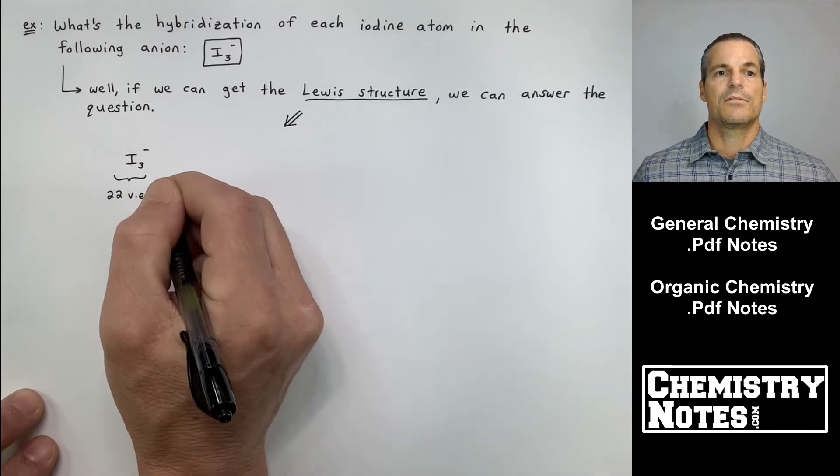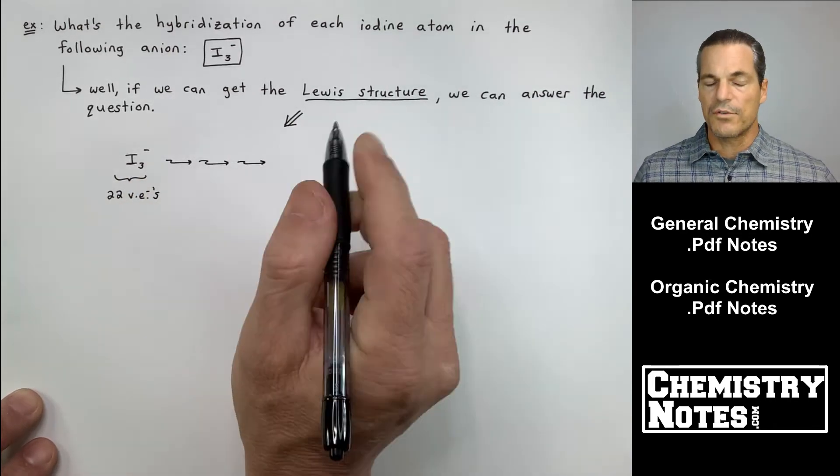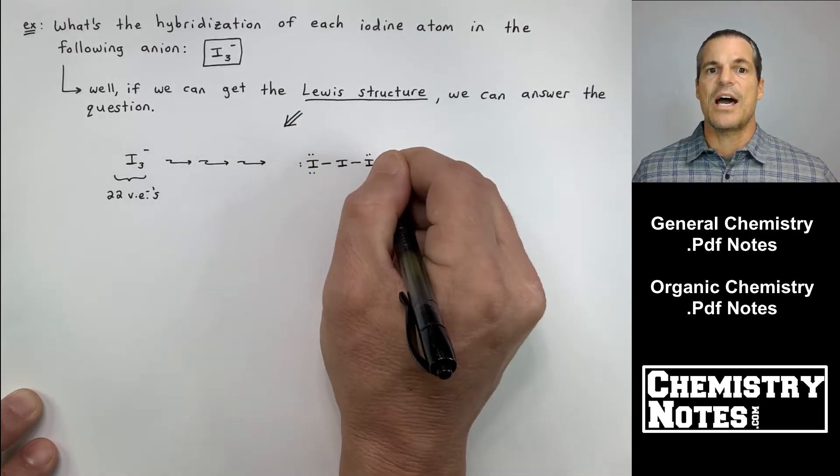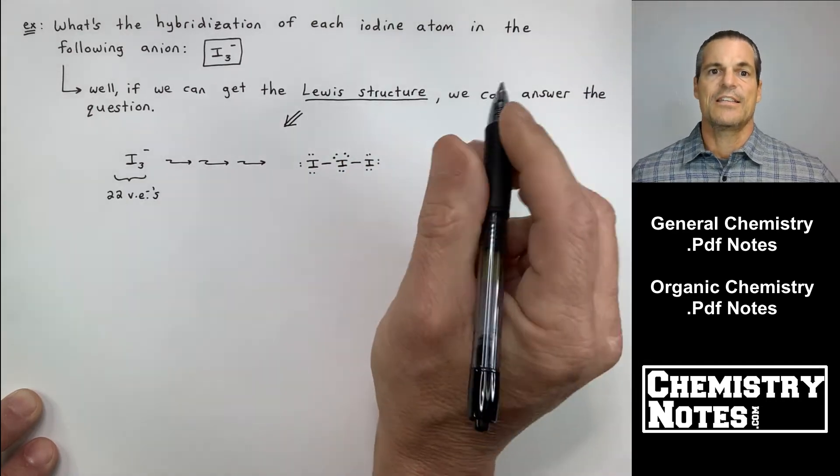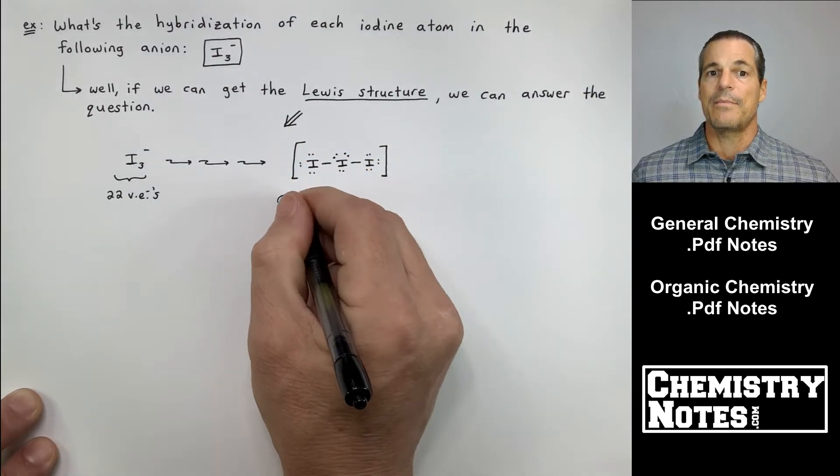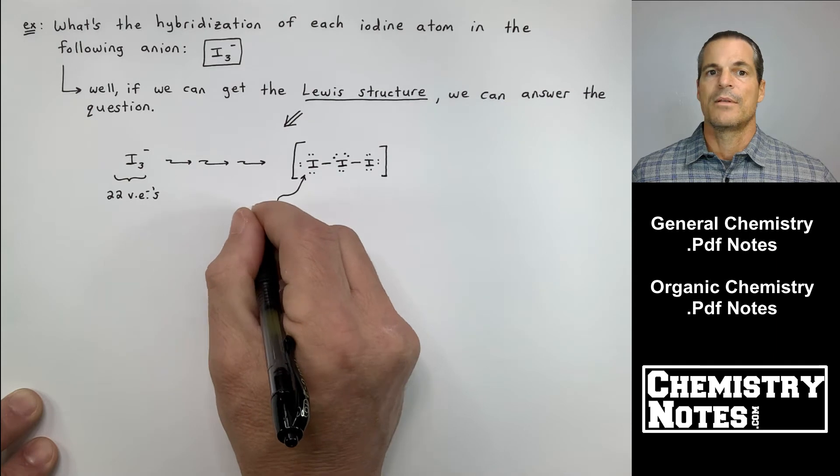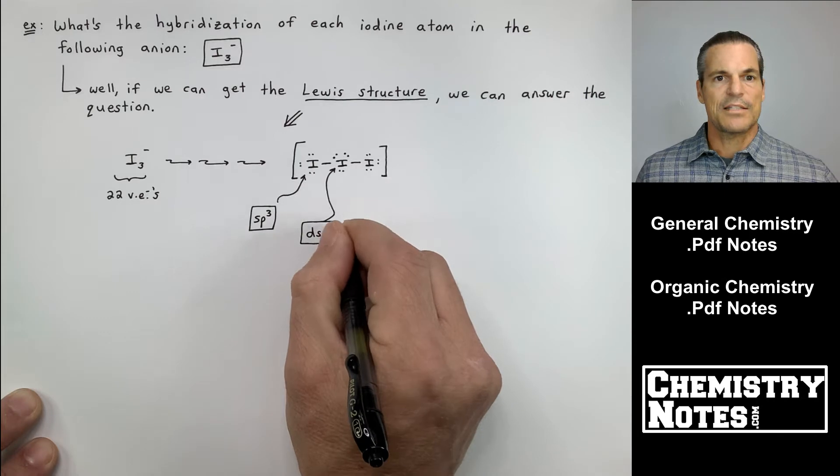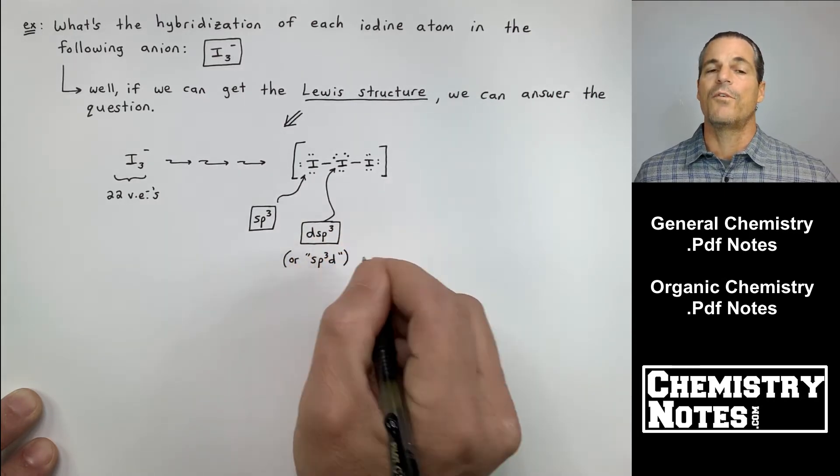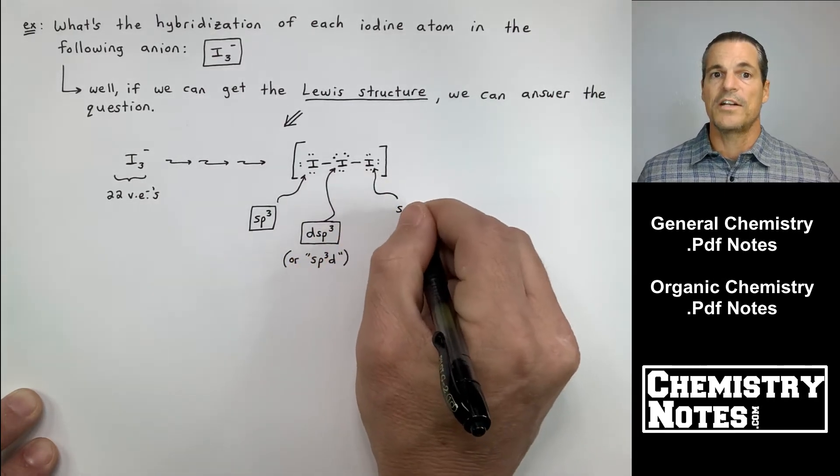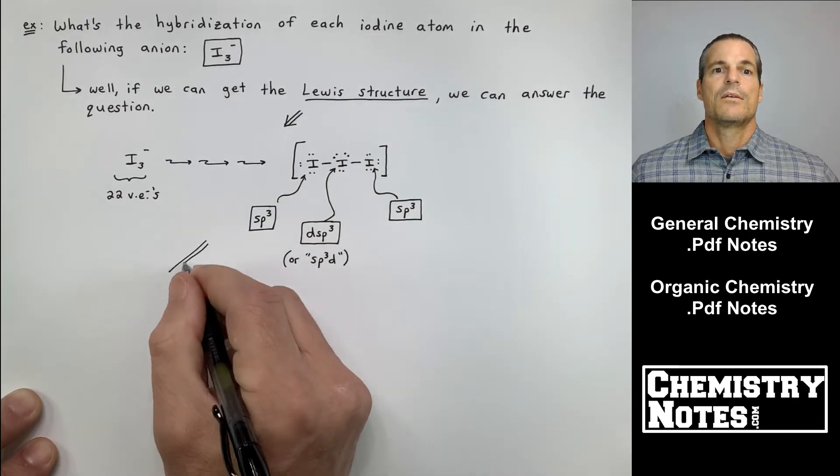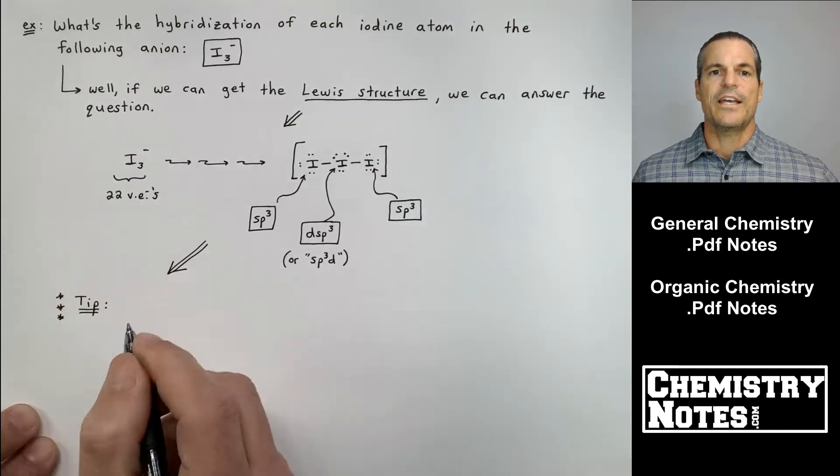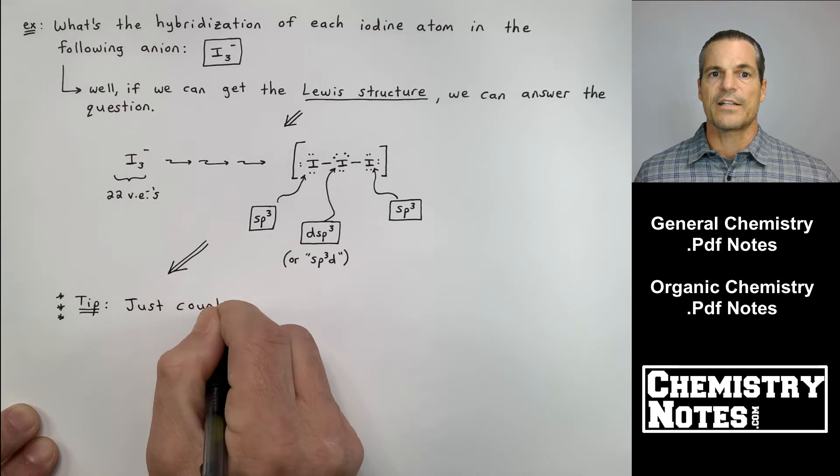So if we can get the Lewis structure, we can certainly answer this question. So I3- has 22 valence electrons. If you go through the process, you end up with an I-I-I kind of in a line, but then the iodine in the middle, the central atom, has three lone pairs around it. Iodine's period three or lower, it can have an expanded octet. That's the Lewis structure.